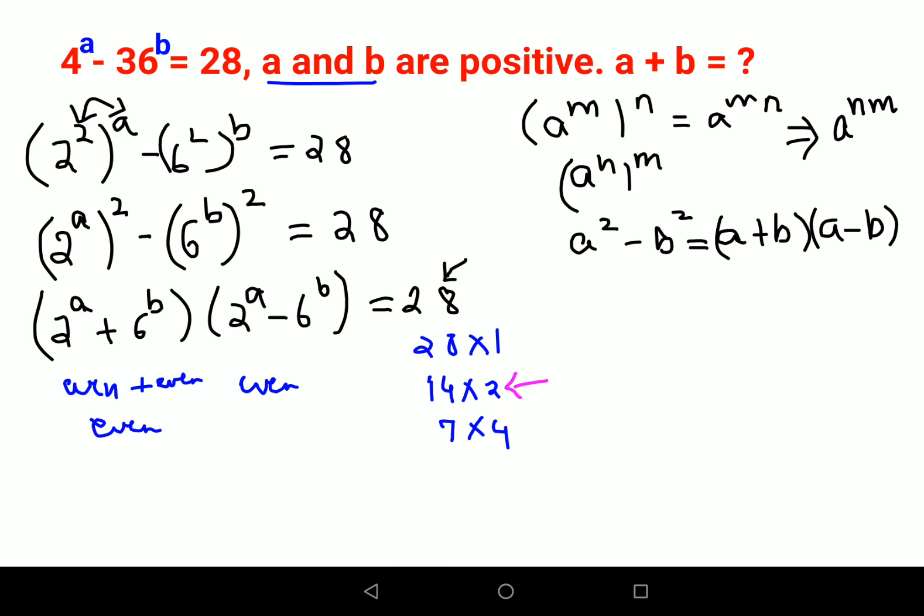We can write 28 as 14 into 2. So now from here I can say that 2 raised to a plus 6 raised to b equals to 14, and 2 raised to a minus 6 raised to b equals to 2.